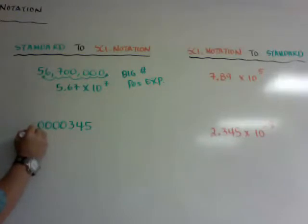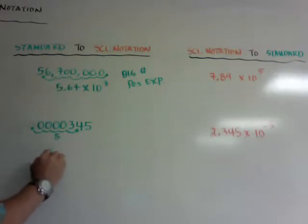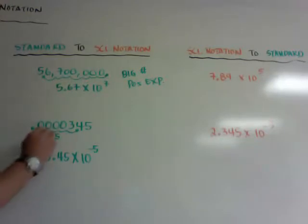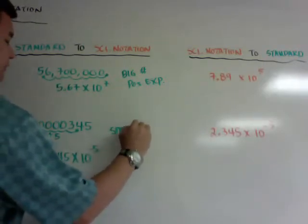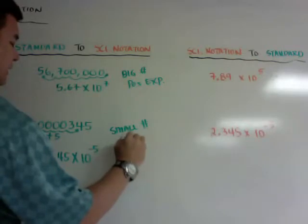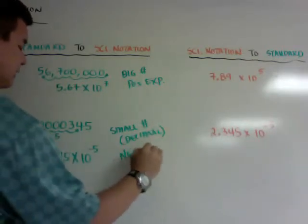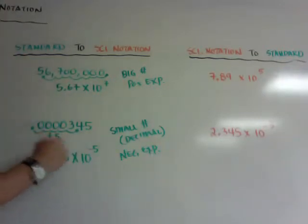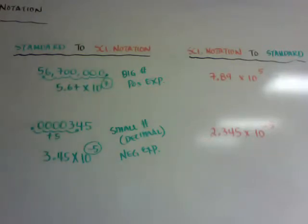Over here, I need to go 1, 2, 3, 4, 5. So I went 5 this way. So it would be 3.45, 10 to the, and I got a minus 5. Since I went plus 5 this way, think of it as going minus 5 over there. Or a small decimal, if a small number or a decimal has a negative exponent. So a small decimal ends up with a negative exponent. A big number ends up with a positive.